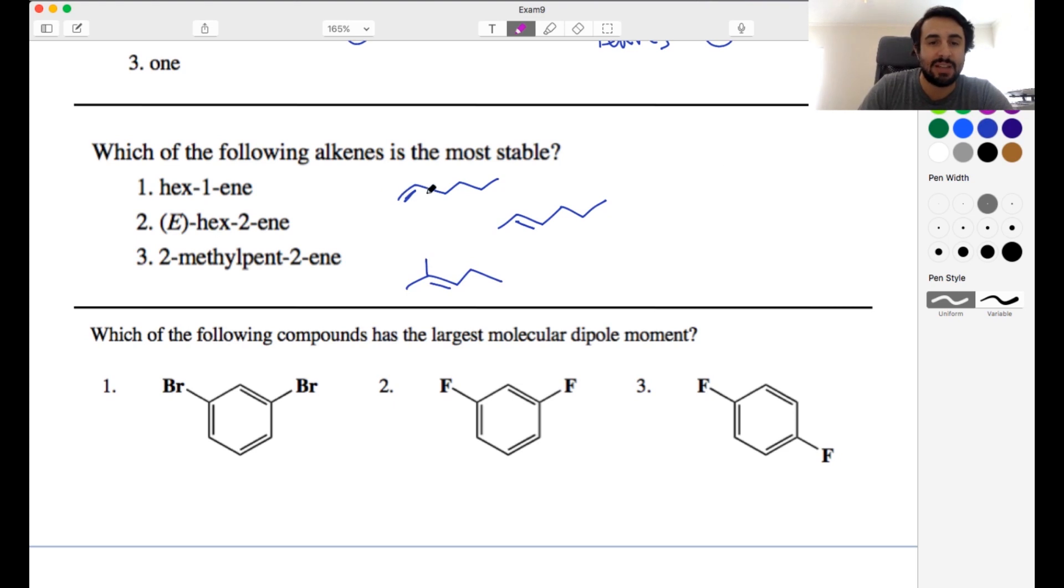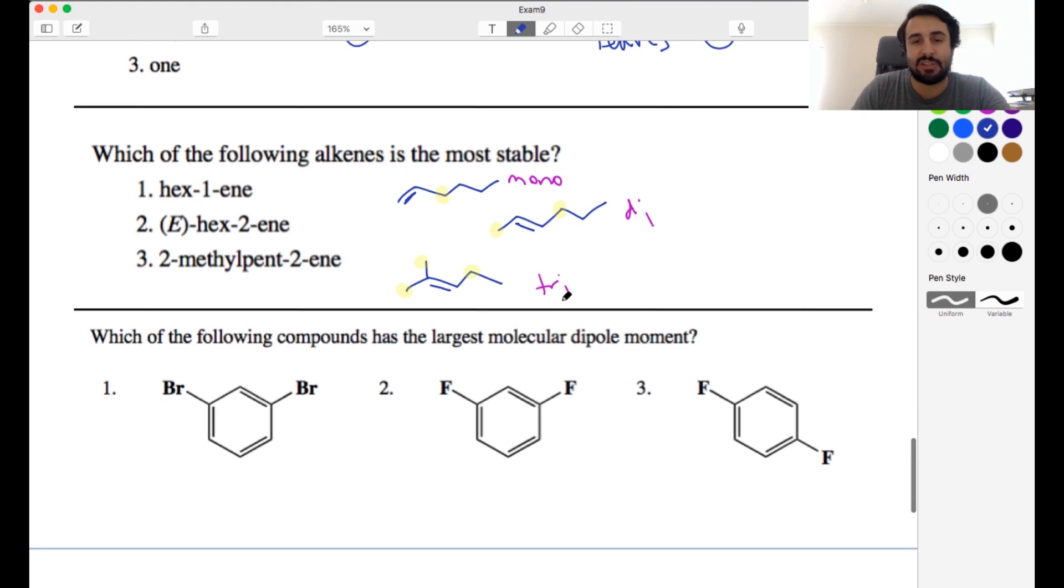So this is a monosubstituted alkene. This is a disubstituted. And this is a tri-substituted. Because if we're talking about one alkyl group, here we're talking about two alkyl groups. And here we're talking about three alkyl groups that are attached to the two carbons participating in the pi bond. So with stability, the greater the degree of substitution, the more stable it is for reasons of hyperconjugation. So tri-substituted is the most substituted and therefore the most stable. So it's going to be that one.